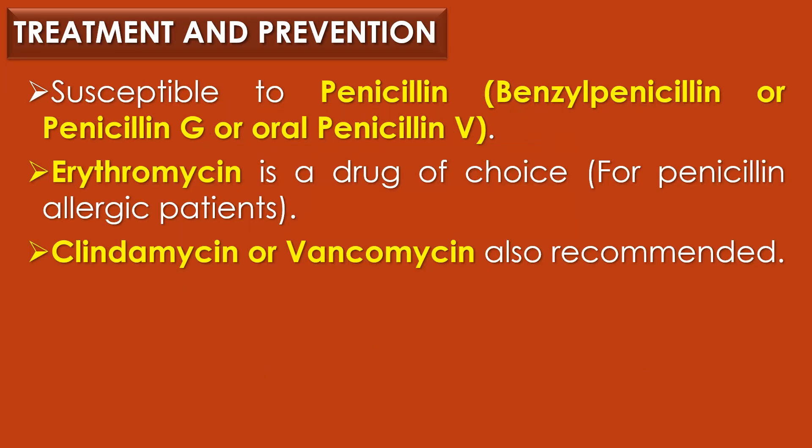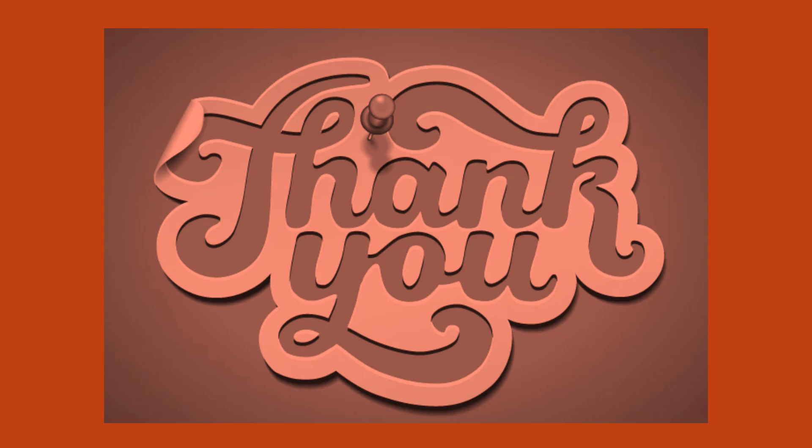Treatment and prevention: Streptococcus pyogenes is susceptible to penicillins such as benzylpenicillin (penicillin G) or oral penicillin V. For penicillin-allergic patients, erythromycin is the drug of choice. In some cases, clindamycin or vancomycin is also recommended. That concludes the discussion on Streptococcus pyogenes. Thank you for your support.